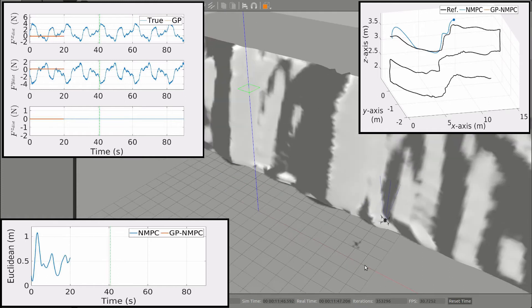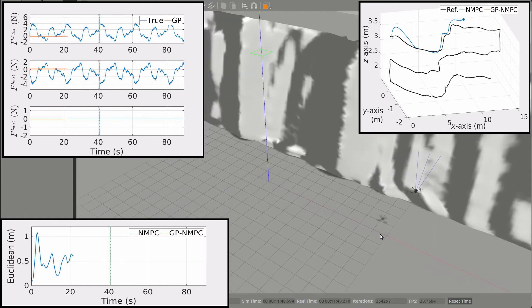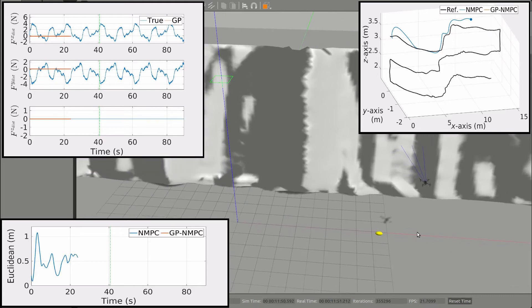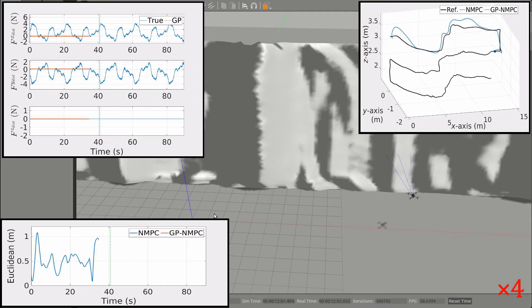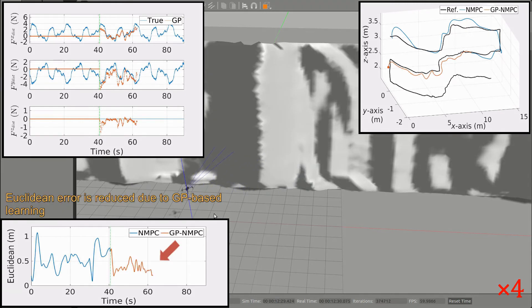In the beginning, the robot flies with the conventional NMPC until the GP model gathers data to initialize its sub-models. Once the GP model is initialized, it provides the learned disturbance forces to the NMPC. As can be visualized in these plots, the Euclidean error is substantially reduced due to the GP-based learning.